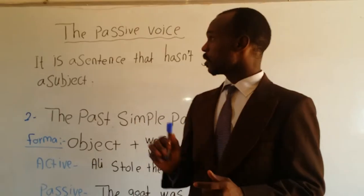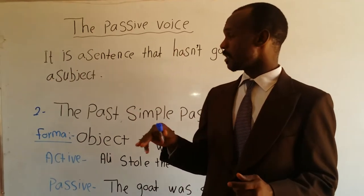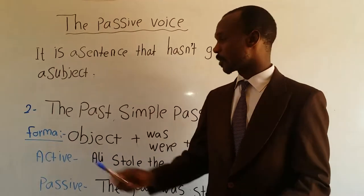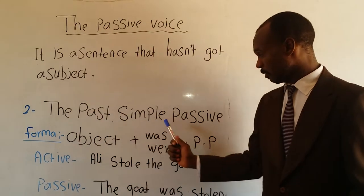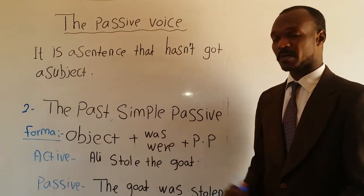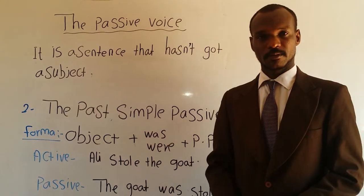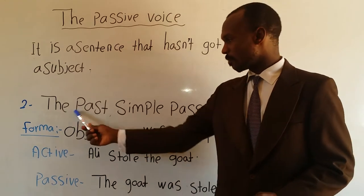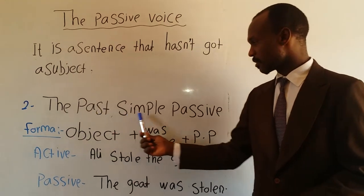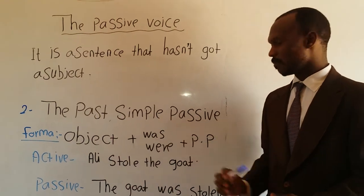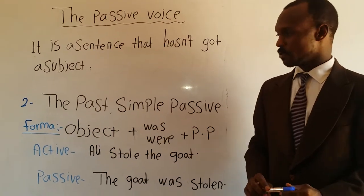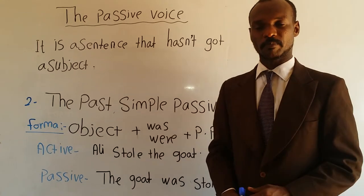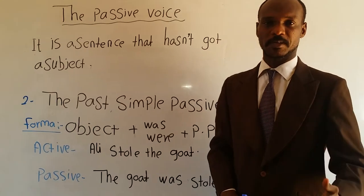Once again, so we want to see — write the passive voice. Write is number two, the past simple passive. So the formula of the past simple passive — it's very easy.